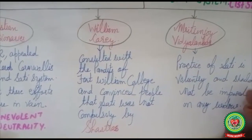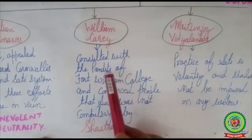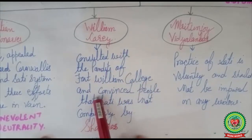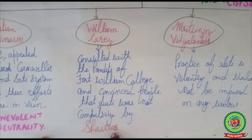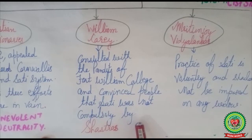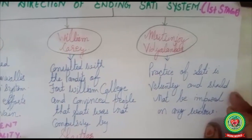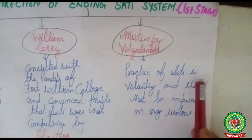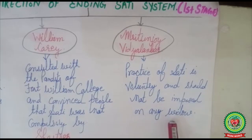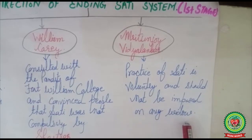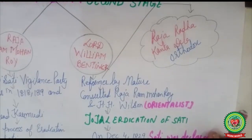William Carey consulted with the pandits of Fort William College and convinced people that sati was not compulsory according to the shastras. He tried to tell the Indian people that it is not written in Hindu scriptures that sati should be performed — it was not compulsory. Mrityunji Vidi Lanka was of the view that the practice of sati is voluntary and should not be imposed on any widow against her wishes.